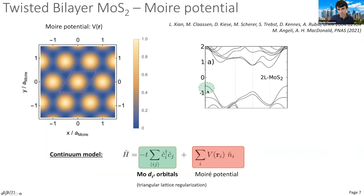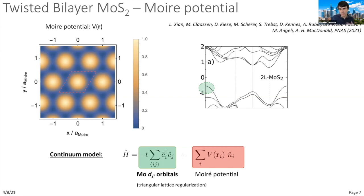We can think about stacking two layers at a slight twist, which effectively engineers—through periodic misalignment of the two layers—essentially asking about the combined dynamics of a free electron gas of molybdenum dz² orbitals in a long-wavelength moiré potential with appropriate lattice symmetries. Looking at the very top of the MoS2 valence band, one has almost perfect six-fold rotation symmetry even though mass symmetry is reduced in the twisted heterostructure. We can really think of this as a scalar potential on top of a free electron gas.